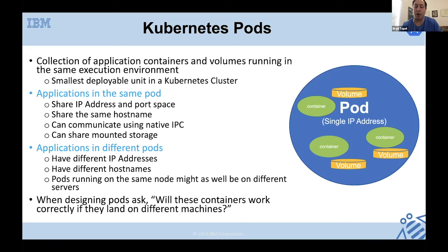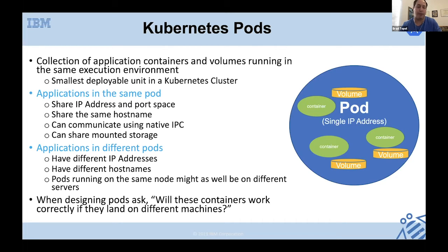Application containers in different pods have different IP addresses and hostnames — it's as if they're running on different servers. When designing pods, ask yourself: will these containers work correctly if they land on different machines? A good example of putting containers in different pods is a web application and a database — you typically scale the web application at a higher rate than the database, so separate pods let Kubernetes scale them independently.